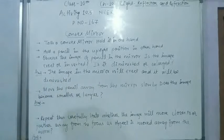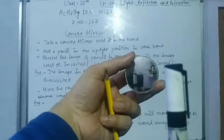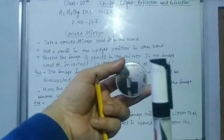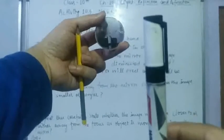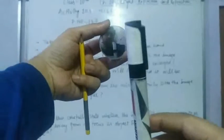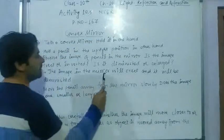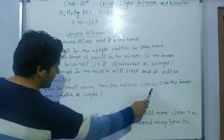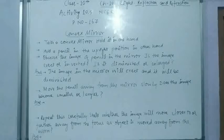Again, let me demonstrate this time with a marker. I am holding this marker in front of the mirror and you can see the image is smaller than the marker. The image is smaller in size and it is erect. So the answer is: the image in the mirror is erect and diminished.